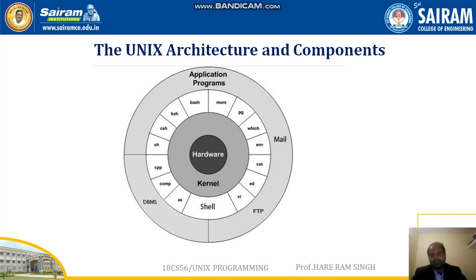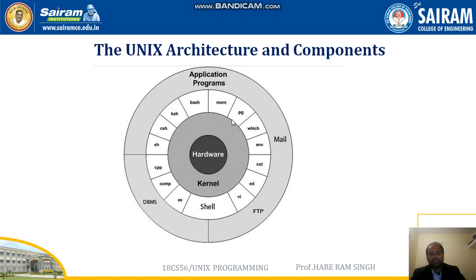Continuing with the first module, introduction. Next we are going to study the Unix architecture and components. You can see the diagram here — in the center part it has the hardware, then the kernel, and after that the shell. Different shells are there: K shell, Bash. Along with that there are different commands and utilities like bi, ed, cut, env, pg. The outer part has the application programs: mail, ftp, and DBMS. This is how the Unix operating system is structured.